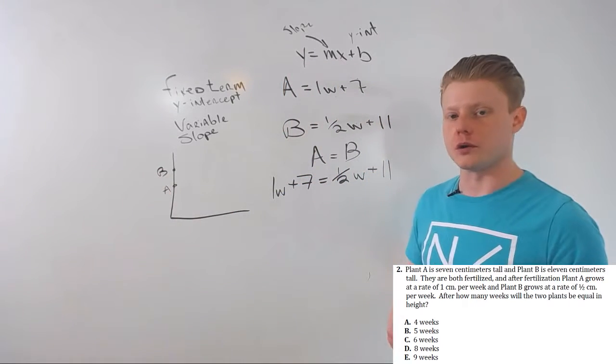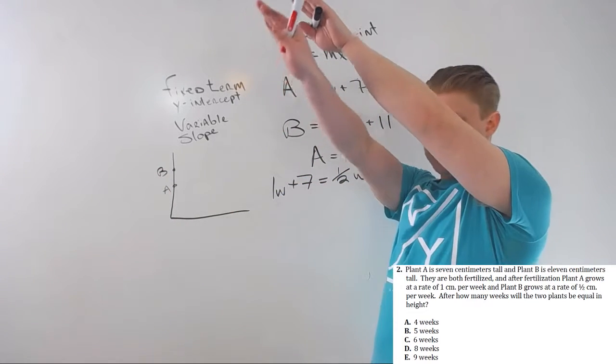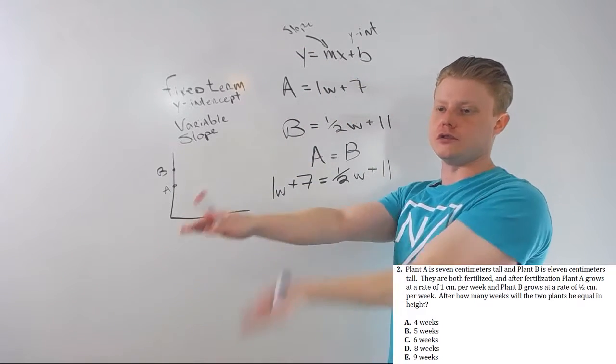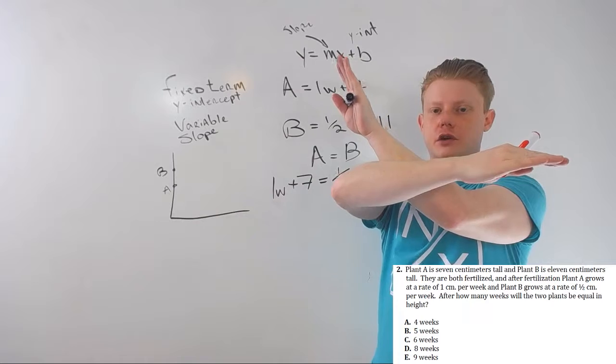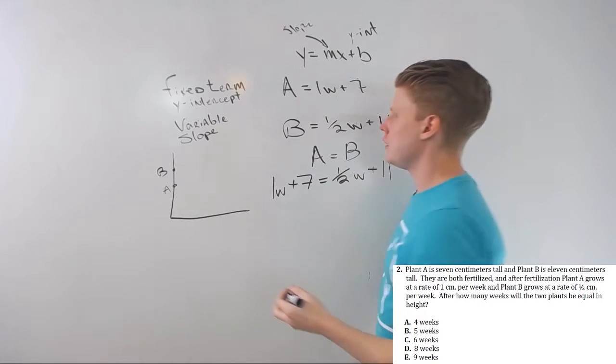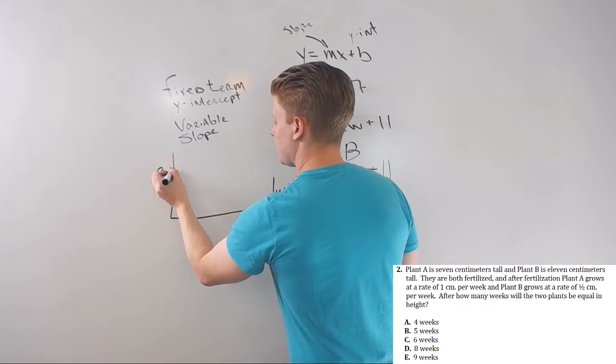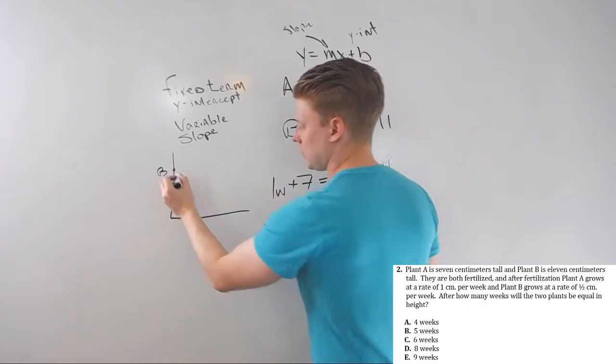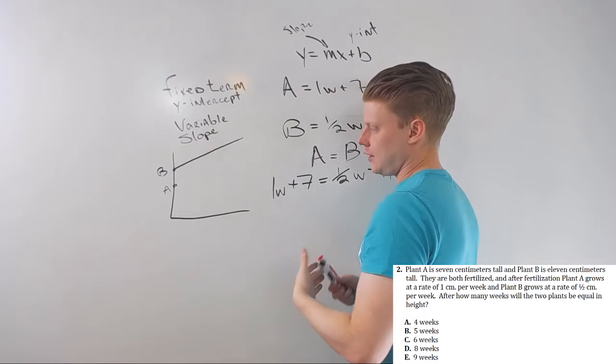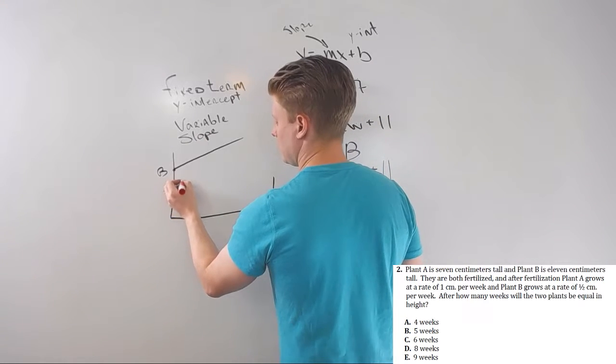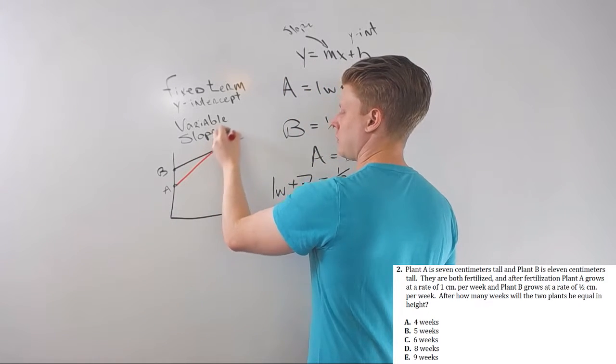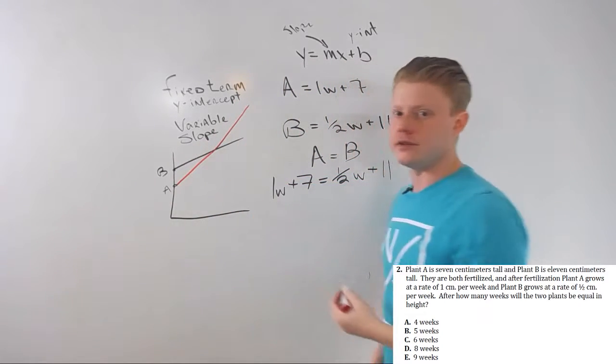These problems will always work this way. Now it won't always, they won't always be going both up. Sometimes they'll both be going down, and very occasionally they'll have opposite side slopes where one will be going up and one will be going down. So B goes up reasonably gradually, right, it goes up kind of like this. A starts lower but it goes up more steeply, and then at some point A's going to cross and leave B in the dust.